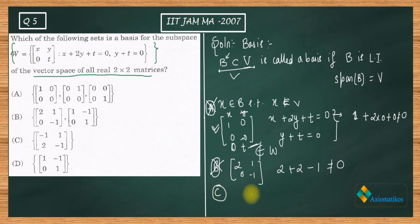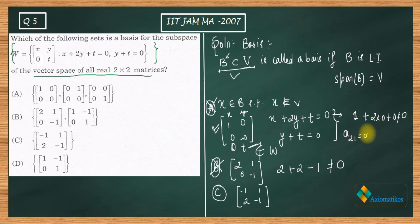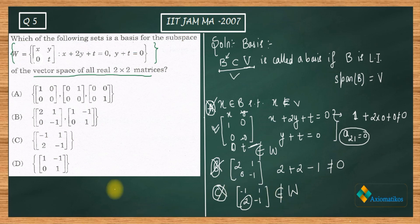Now for Option C, the element is [-1,1;2,-1]. According to the definition of the subspace W, the entry a₂₁ must be 0. Since a₂₁ = 2, which is not zero, this element does not belong to W. So Option C is also incorrect.